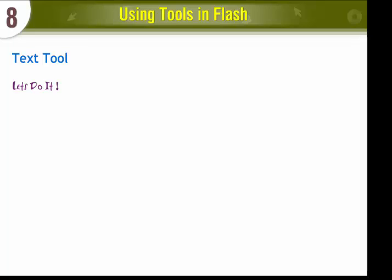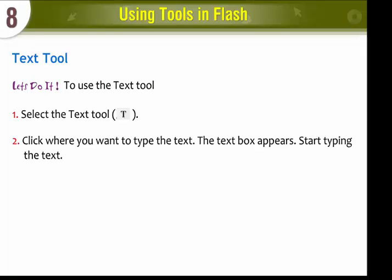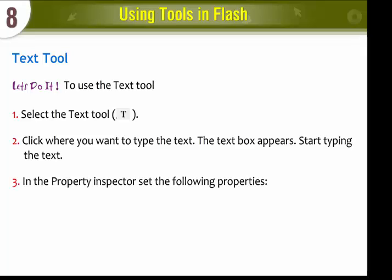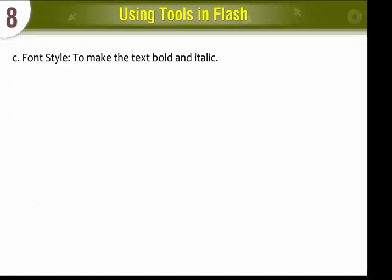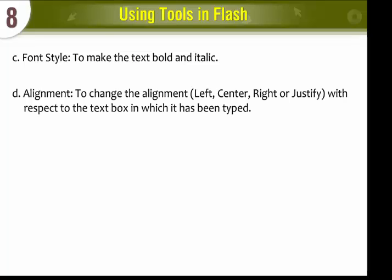Text Tool. To use the Text Tool, select the Text Tool and click where you want to type the text. The Text Box appears — start typing. In the Property Inspector, set the following properties: Font to select the Font Type; Font Size to make the text size bigger or smaller; Font Style to make the text Bold and Italic; and Alignment to change the alignment — Left, Center, Right, or Justify — with respect to the Text Box in which it has been typed.